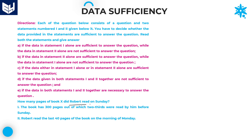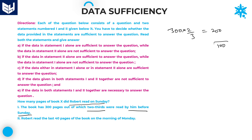Next question: how many pages of book X did Robert read on Sunday? Looking at statement 1: the book has 300 pages total, and two-thirds were read by him before Sunday. Two-thirds of 300 = 200 pages completed before Sunday, leaving 100 pages remaining.